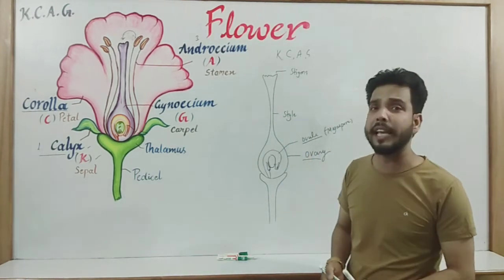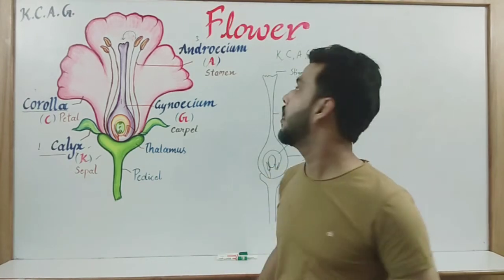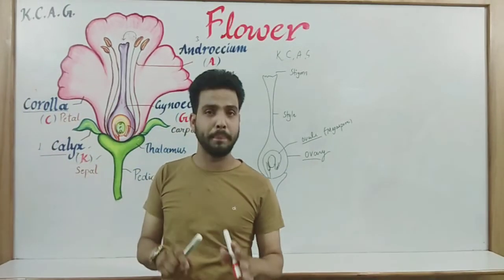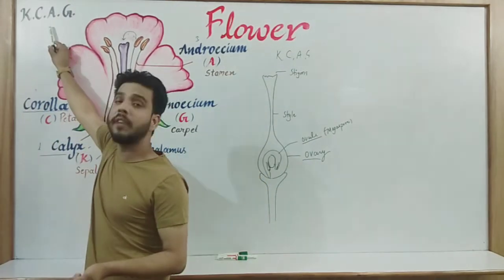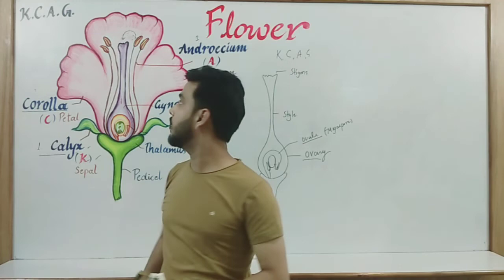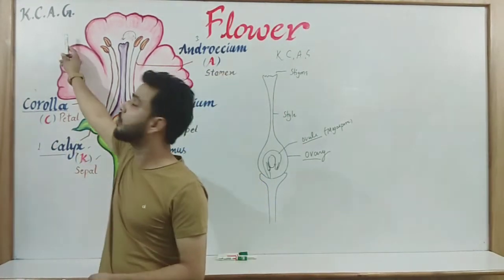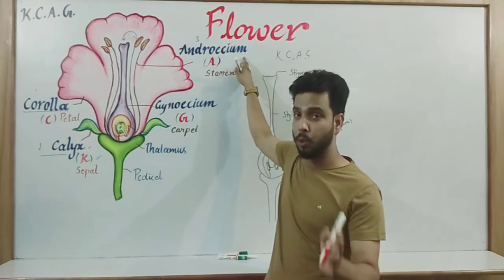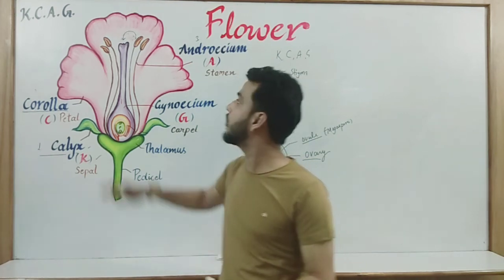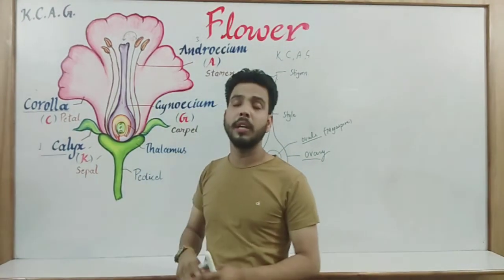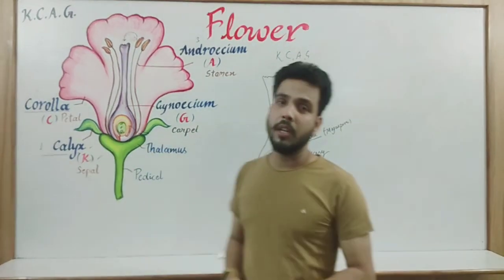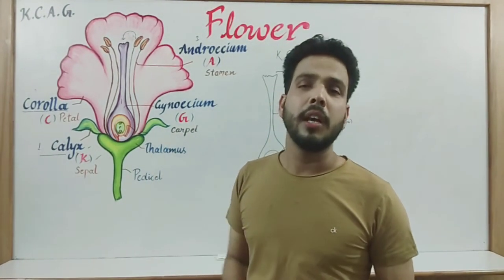So, it was all about KCAG. There are 4 major parts in a flower: K for calyx, single unit is sepal, represented by capital K; C for corolla, single unit is petal, represented by capital C, and it attracts insects for pollination; A for androecium, single unit is stamen, it is the male part that produces pollen grains or male gametes; and finally G for gynoecium, the innermost part, which is the female part consisting of ovules — the female gametes. This was all about the structure of a flower and all the floral parts.